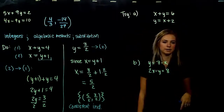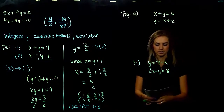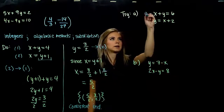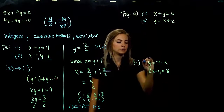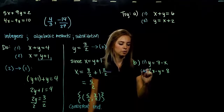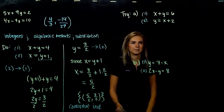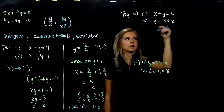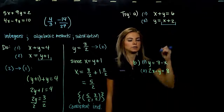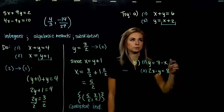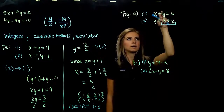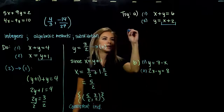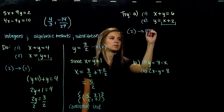Here are two for you to try — go ahead and use the substitution method on those. I'll label them 1 and 2. In part a, the easiest route: y is already isolated, equivalent to x plus 2. So wherever I see a y in equation 1, I'm going to plug in x plus 2 and solve. I'm taking equation 2 and substituting it into equation 1.